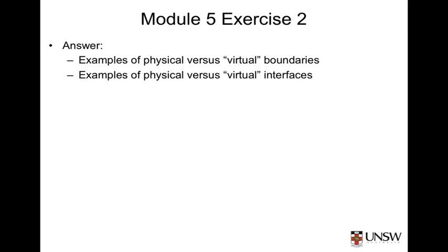Other things to think about are the interfaces between our house and external systems. Examples include connections to power, telecommunications, water, gas, sewerage, stormwater and so on. Each of these connections will be specified by an interface specification describing how you are to connect to these government-provided services. These are examples of physical interfaces because something physically crosses our boundary in the form of wires, pipes or something like that.